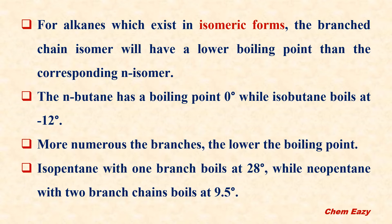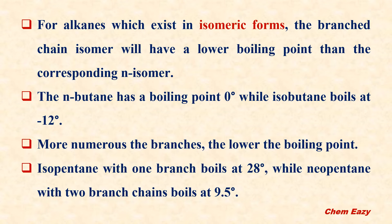In case of isomeric forms of alkanes, compare to the N-isomer — it means the isomer without branch — if you compare with the branched chain isomer, then the branched chain isomer will have a lower boiling point than the corresponding N-isomer. For example, N-butane, which is not having any branch, has a boiling point of 0 degrees. But in case of isobutane, which is having one branch, it boils at minus 12 degrees. More numerous the branches, by increasing the number of branches, the boiling point will be decreased.